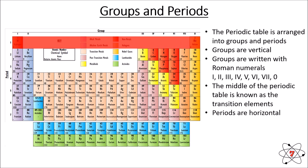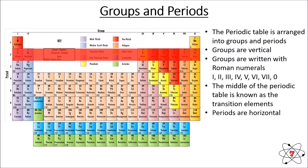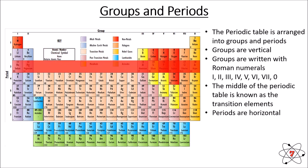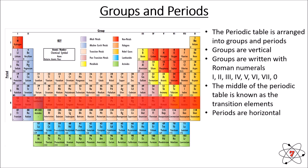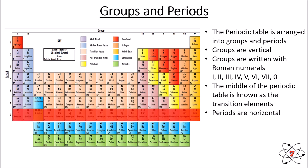If groups are vertical, then periods are horizontal. Period one is at the very top of the periodic table and only consists of two elements — hydrogen and helium. People often forget that period one is hydrogen and helium, so don't make that mistake. Period two is the next row going down, then period three, four, five, six, and finally period seven.